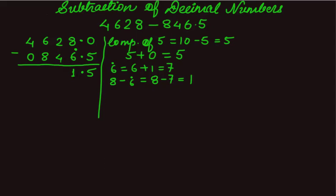Moving on to 10's place, we can see that again the upper digit 2 is smaller than the lower digit 4. Therefore, we take the complement of number 4, and that is 10 - 4, which is equal to 6. Then we add 6 to the upper digit 2, and that equals to 8.